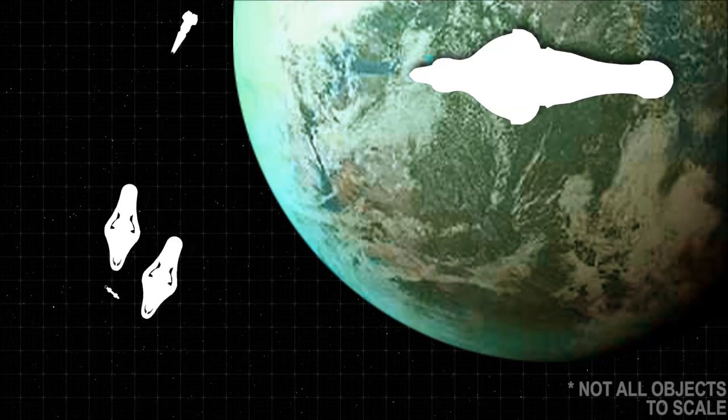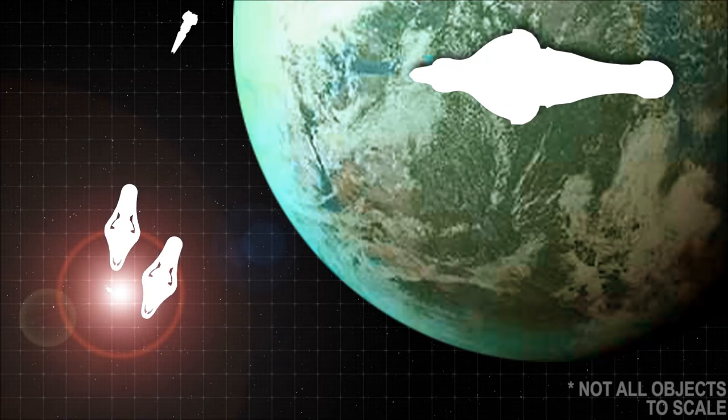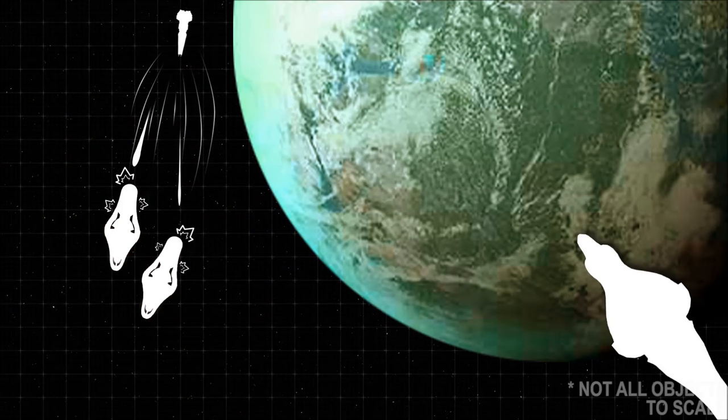However, the nuke Keyes had launched before had now drifted close enough to the frigates. Upon detonation, both frigates lost their shields. The two Mac rounds and the Archer missiles were then more than enough to finish the frigates off.